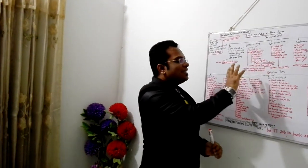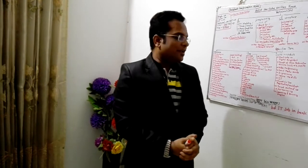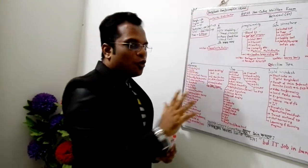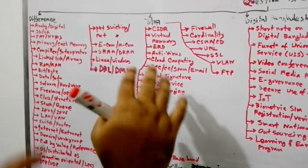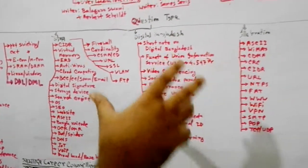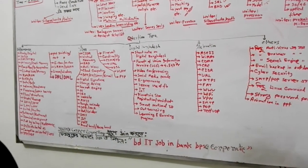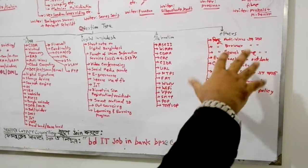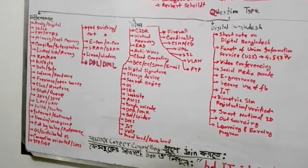Now, for the actual overview of topics, we need to identify what type of questions are asked. There are difference-type questions. We need to read all the different concepts. We also need to cover Digital Bangladesh concepts, trending topics, and government-patronized topics, along with their elaborations.